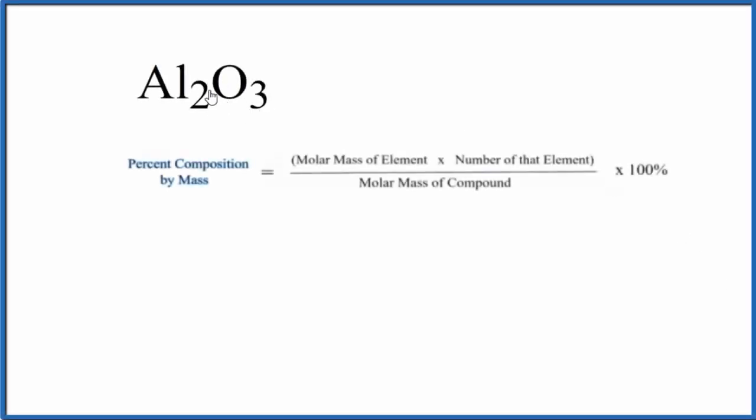In this video, we'll find the percent composition by mass for each element here in Al₂O₃. This is aluminum oxide.